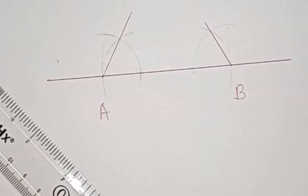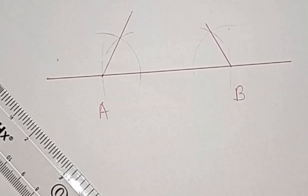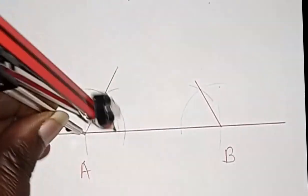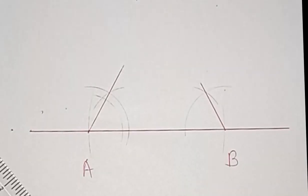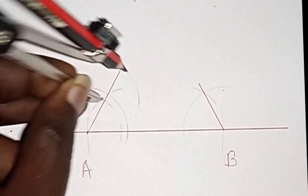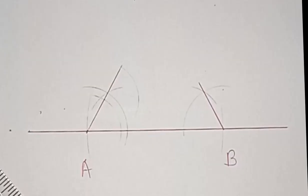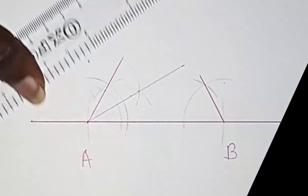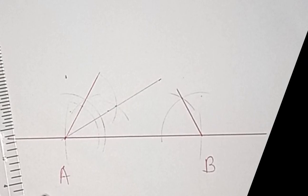To bisect the 60-degree angle at point A, place the compass at the vertex of the angle and draw an arc that intersects both sides of the angle. Without changing the radius, place the compass at one of the intersection points and draw another arc that intersects the previous arc. Draw a straight line through the vertex and the intersection point — this bisects the 60-degree angle to give 30 degrees. Repeat the same process to bisect the 60-degree angle at point B to get 30 degrees.